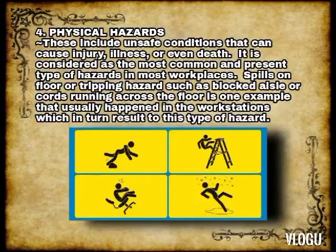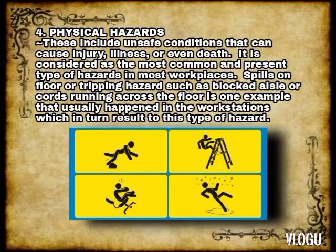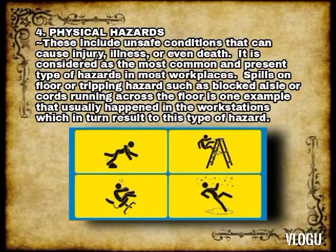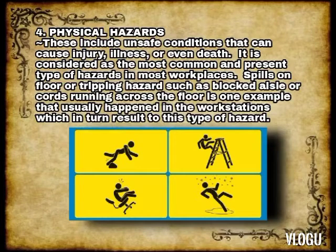Number 4: Physical Hazards. This includes unsafe conditions that can cause injury, illness, or even death. It is considered the most common type of hazard present in most workplaces. Spills on the floor or tripping hazards such as blocked aisles or cords running across the floor are examples that usually happen in workstations, which result in this type of hazard.